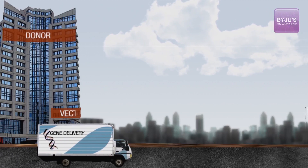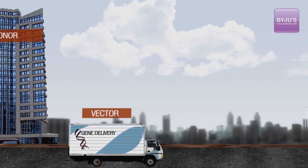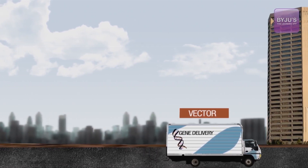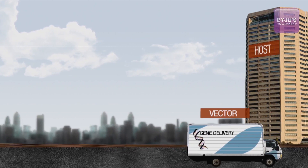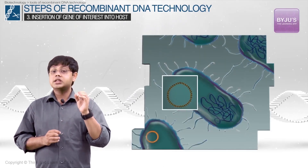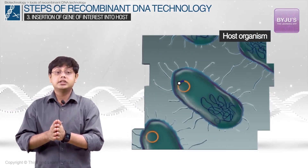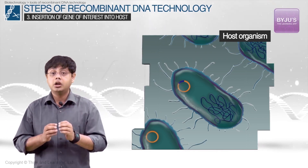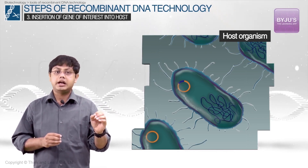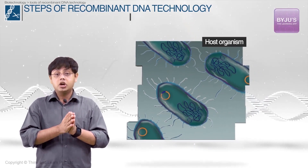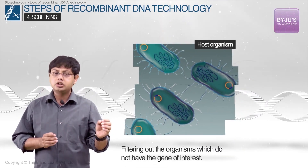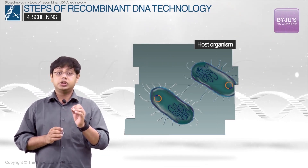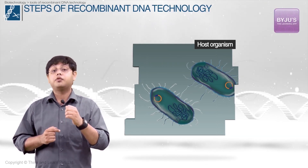In step 3, the gene of interest will have to be delivered into a host organism so that it can replicate and translate the protein of choice. To accomplish this, a vector or vehicle is used. The gene of interest needs to be incorporated into a delivery vehicle which will insert it into a host — these delivery vehicles are called vectors. The vectors are inserted into the living organism so that this organism is able to express the gene of interest. Since all of this happens at a molecular level, we need a method of screening or filtering out the organisms which do not incorporate the vector containing the gene of interest. This screening mechanism constitutes step 4.